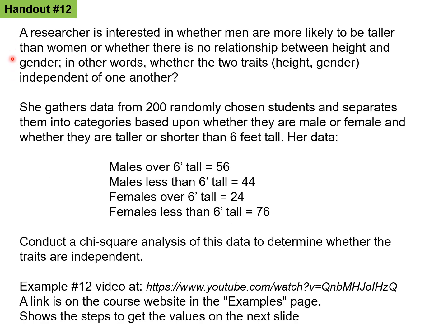So an example of a test of independence comes from this scenario here. Researcher interested in whether men are more likely to be taller than women or whether there's no relationship between height and gender. In other words, whether the two traits, height and gender, are independent of one another. So there's this scenario where the researcher gathers some data. In fact, this is example number 12 on the course website. So there's the YouTube address. It's also linked to on the course website on the examples page. So I recommend you go check out that video. And that one shows how to get the values that are on the next slide.